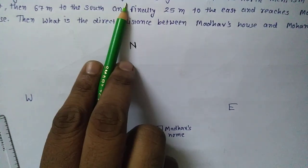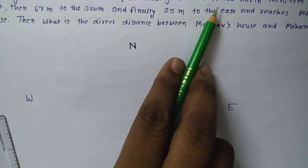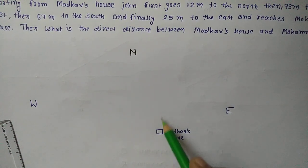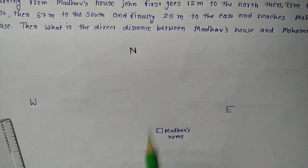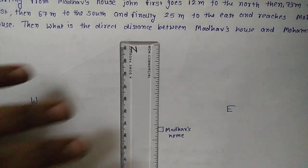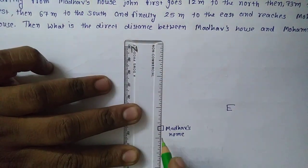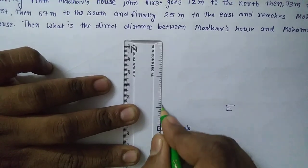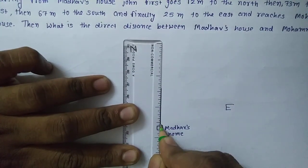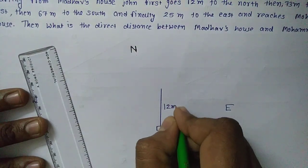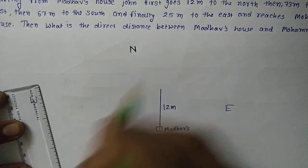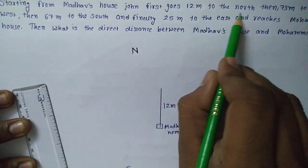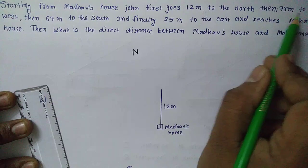Starting from Madhav's house, John first goes 12m to the north. You can see here is the house and north direction is here, so he went up. He begins from here and goes 12m in the north direction. Then he goes 12m to the north, then 73m to the west.